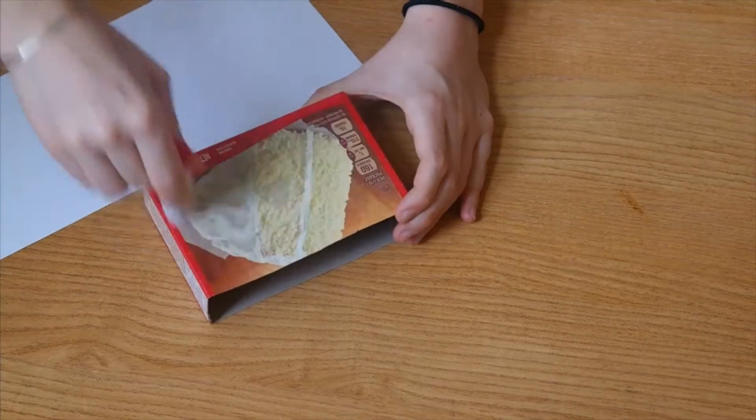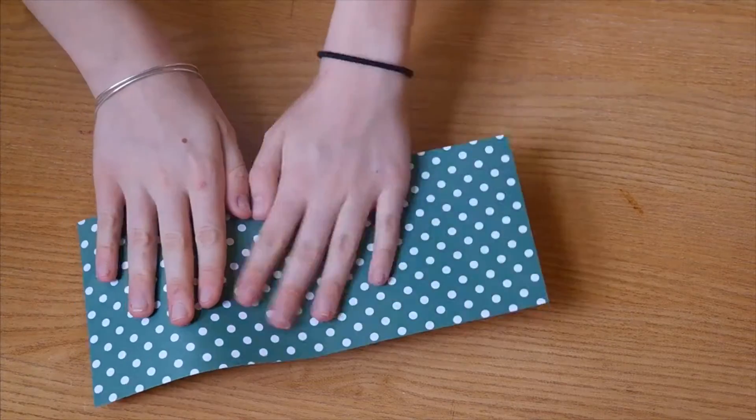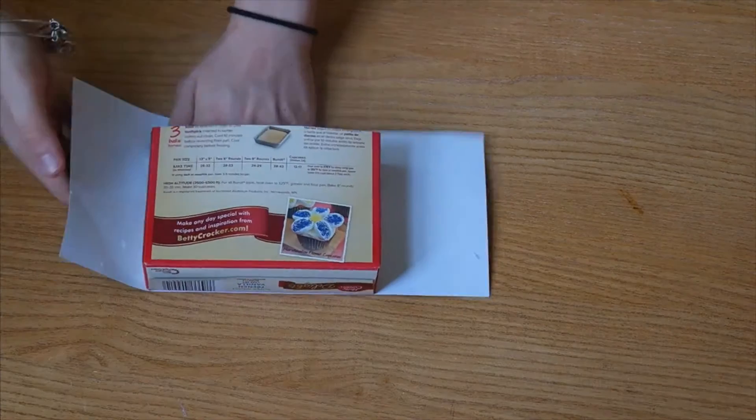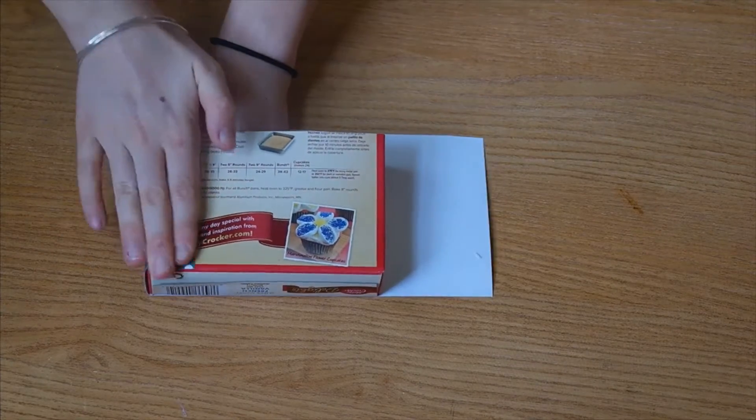Next take an even smaller box, I used a cake butter box, and cut it in half, and cover that in your scrapbook paper. This time I used a glue stick instead which worked just as well.